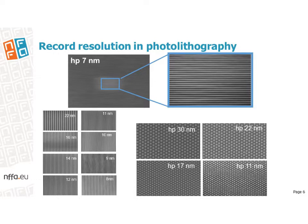The resolution of a lithography tool is measured as the achievable density of the printable structures, which corresponds to the half pitch of a periodic structure. This method can currently achieve down to 6 nm half pitch, marking the world record in photolithography. Here you can see dot arrays and grating structures down to 7 nm half pitch — these are the smallest patterns ever written with photons.